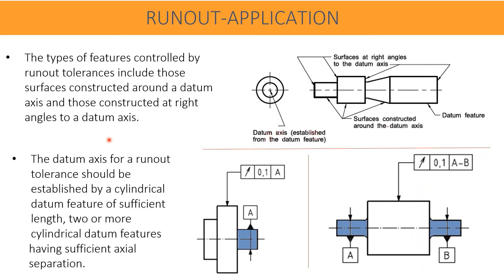The types of features controlled by runout tolerances include those surfaces constructed around a datum axis and those constructed at right angles to a datum axis. In this figure you can find all the cylinders and the conical surfaces are constructed around the datum axis, and the vertical surfaces or planes are constructed at right angles to the datum axis.